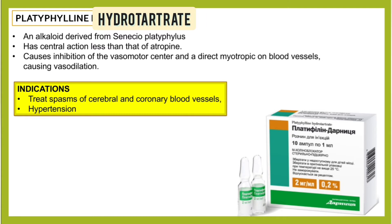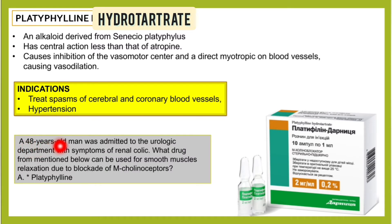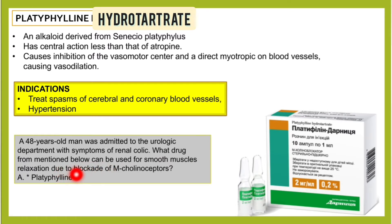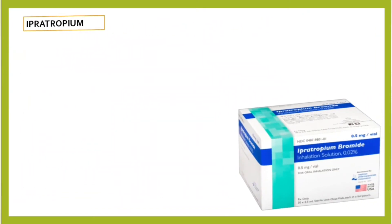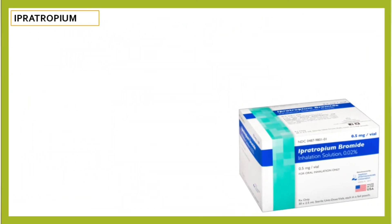It can also be used in hypertension. In an exam question, a 48-year-old man was admitted to the urologic department with symptoms of renal colic — the correct answer for smooth muscle relaxation due to blockade of m-cholinoreceptors was platyphylline. Next is ipratropium bromide.